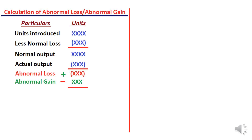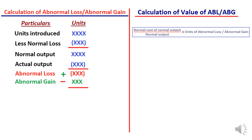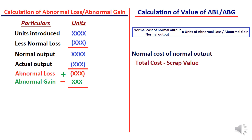Once we have units, we need to calculate the value of abnormal loss or abnormal gain to write in the process account. The formula is: (Normal cost of normal output ÷ Normal output) × Abnormal Gain or Abnormal Loss. To find normal cost of normal output: Total cost minus sale of scrap value. This gives the normal cost of normal output, which we then apply in the formula.